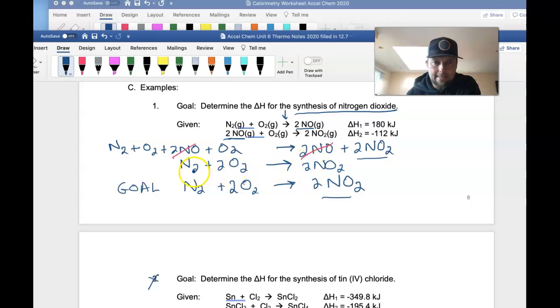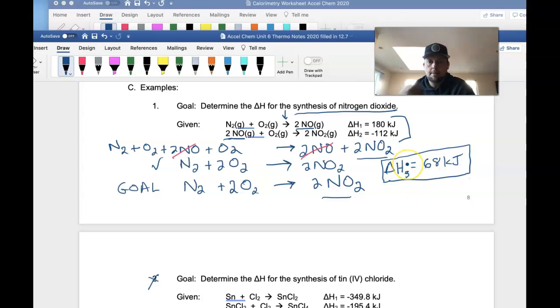But we're not done yet, because when we add those two reactions together, we also have to add their heats together. So if I do 180 kilojoules plus negative 112 kilojoules, I believe, with a little mental math, I'll call this delta H3, we are going to get 68 kilojoules. So we found our heat, and that would be your answer on a test. You do have to show your work. But if you're trying to find the correct amount of heat by doing that work.